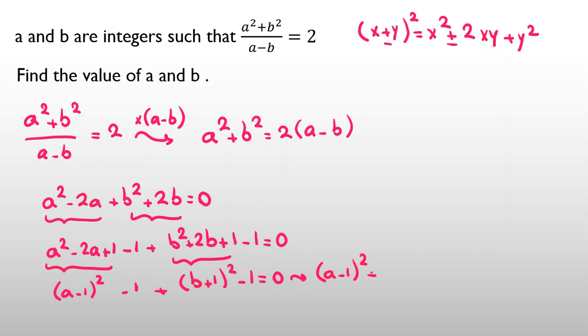Because a and b are integers, the only possible case to create two is that each perfect square should be 1.